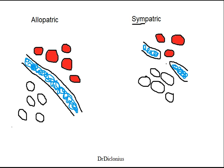Whereas in sympatric speciation there is no geographical barrier. However, the different populations might be able to exploit a different micro-habitat — which is what these guys are doing. Maybe they are the ones who are able to eat this type of food that is on this side of the forest or whatever.